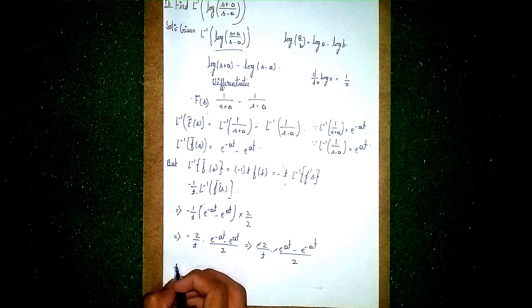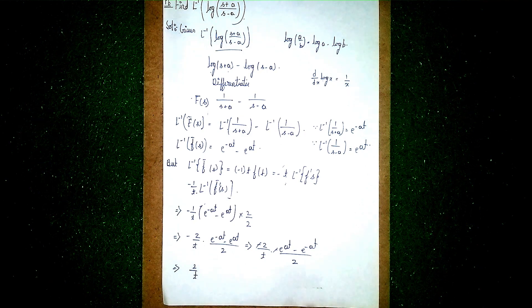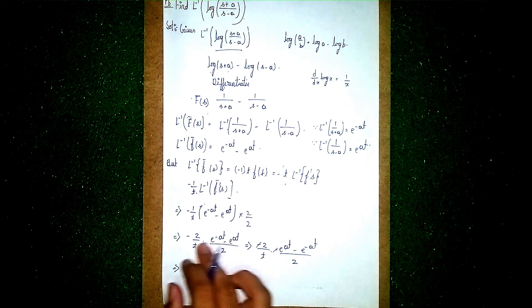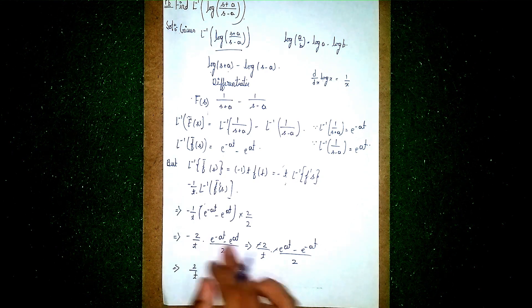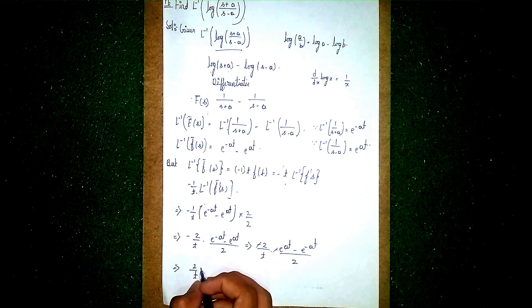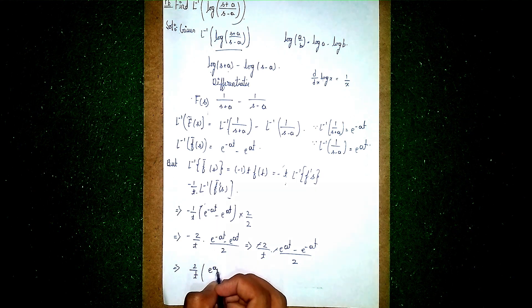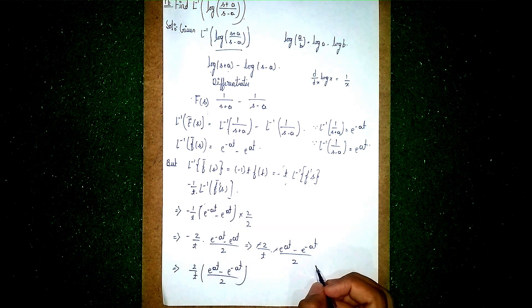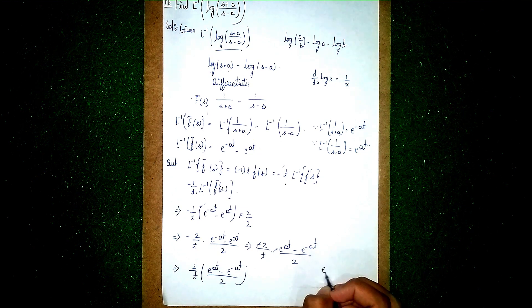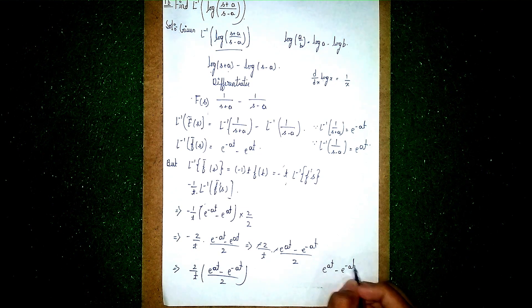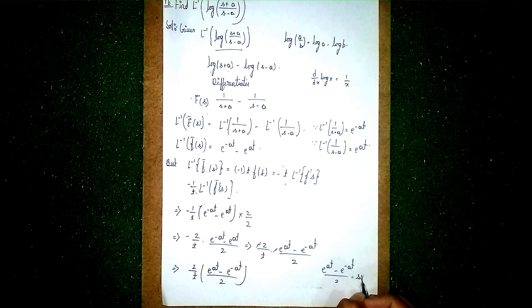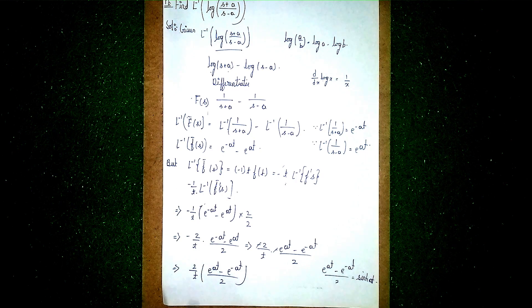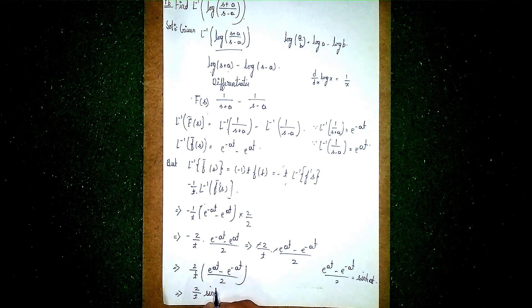What remains is 2/t times (e^(at) minus e^(−at))/2. This is in the form of sinh(at), since e^(at) minus e^(−at) divided by 2 equals sinh(at). So our final answer is (2/t) sinh(at). Thanks for watching.